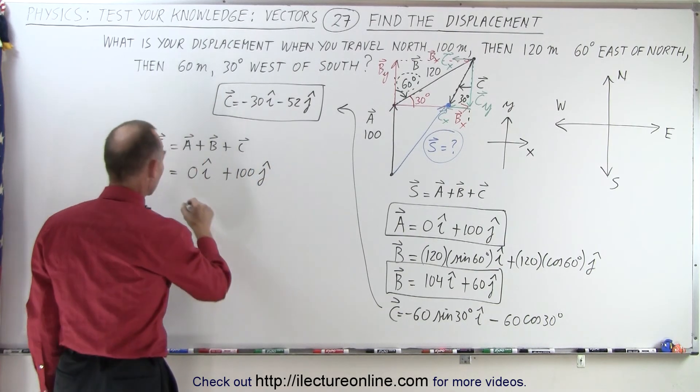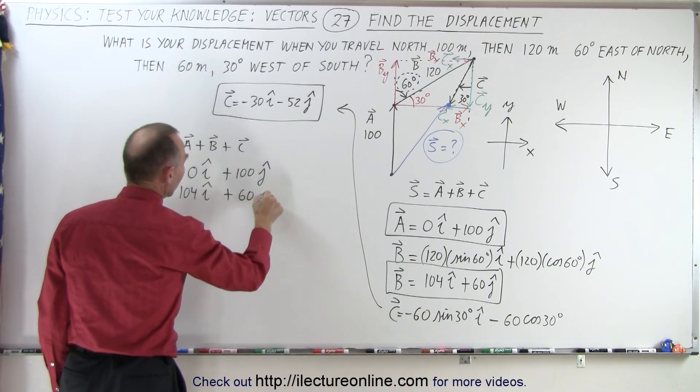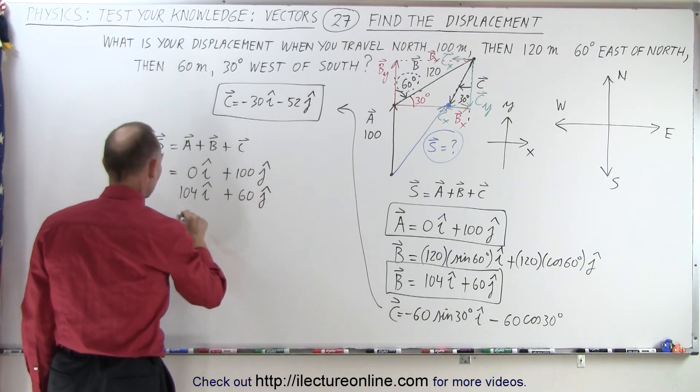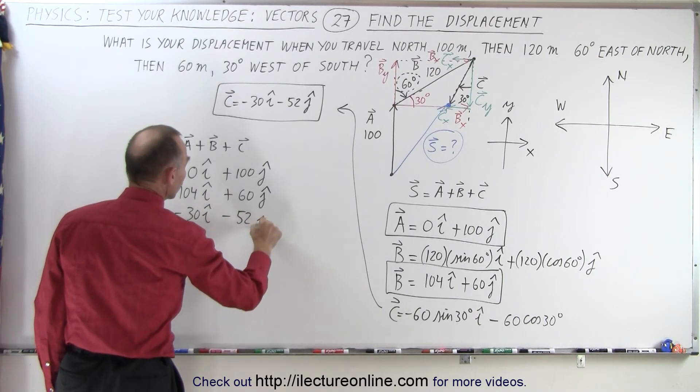The B vector is going to be 104I plus 60J. And finally, the C vector is going to be minus 30I and minus 52J.